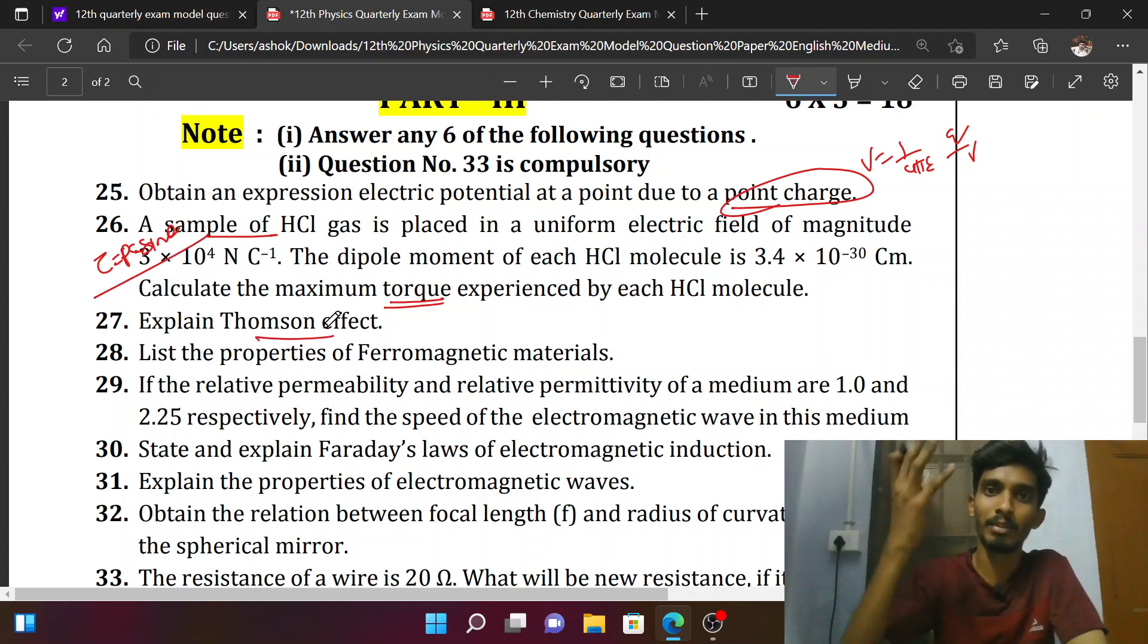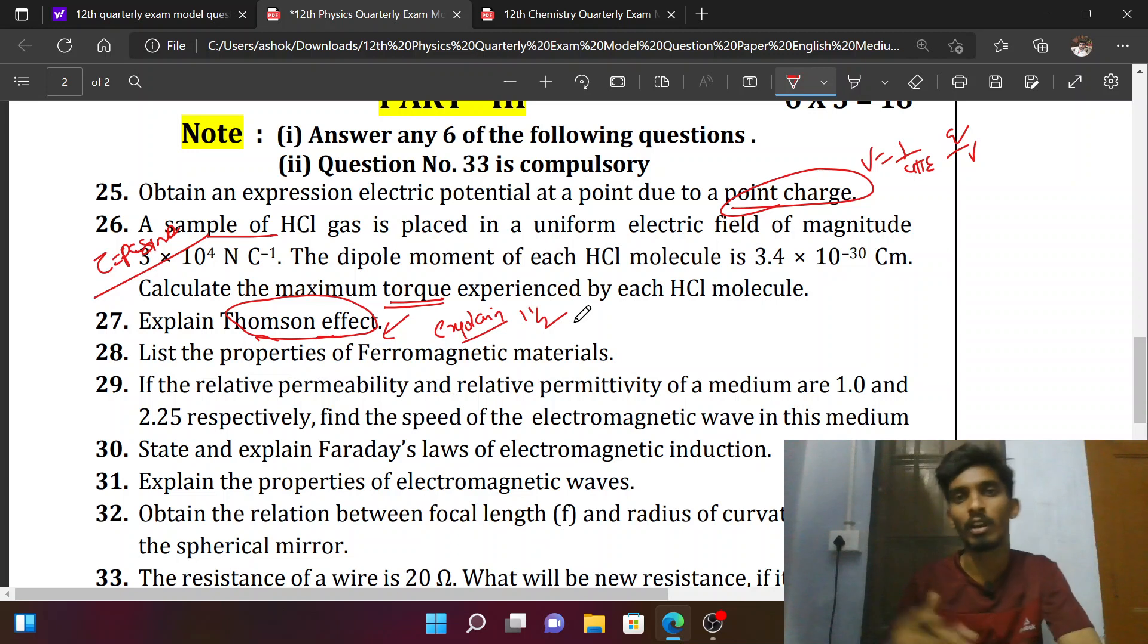Explain the Thompson effect. This is the main issue. If you prefer Thompson effect, here is the Peltier effect and Seebeck effect. This is the definition for 2 marks, that's enough. When you ask 3 marks to explain, first claim the definition—that's 1 mark. Then apply the detail in 1 and 1 mark. That explanation is mandatory. This question is asking in 3 marks.